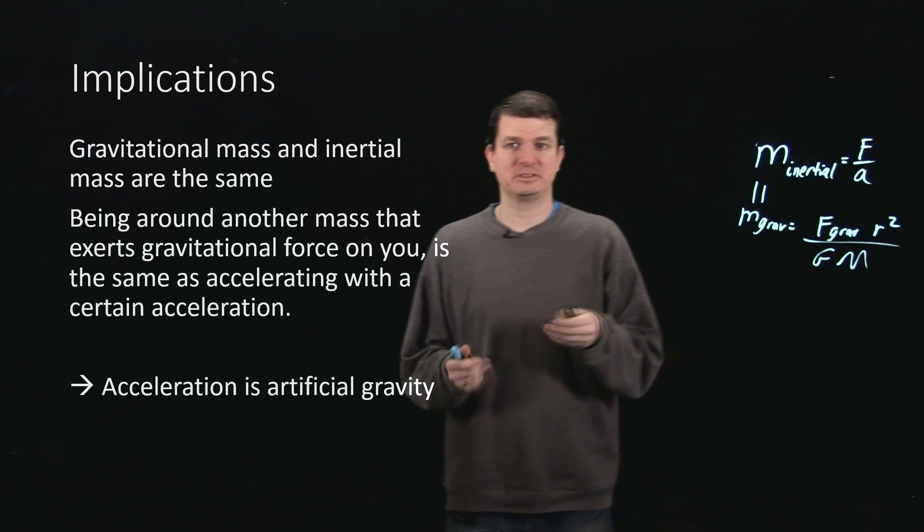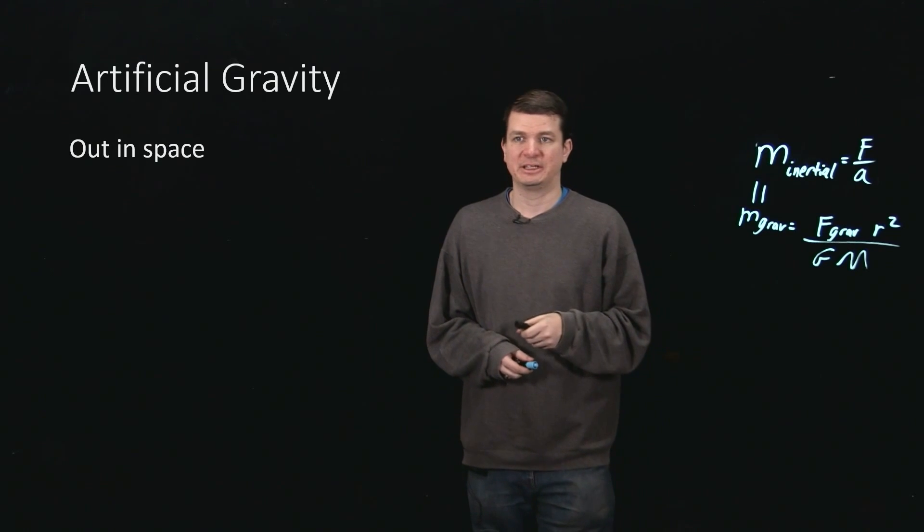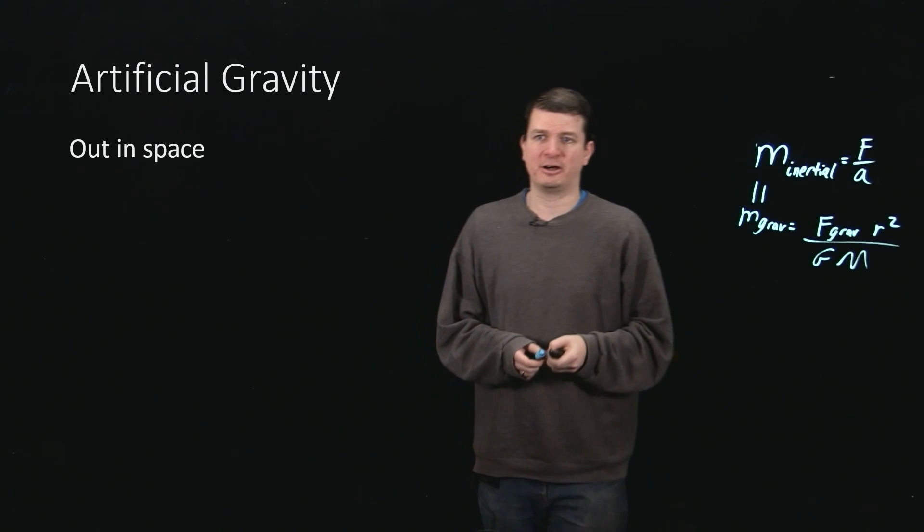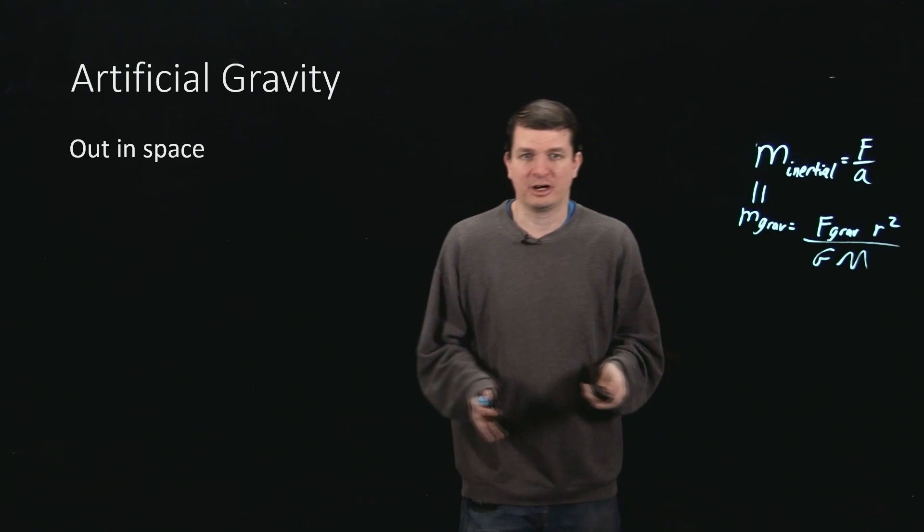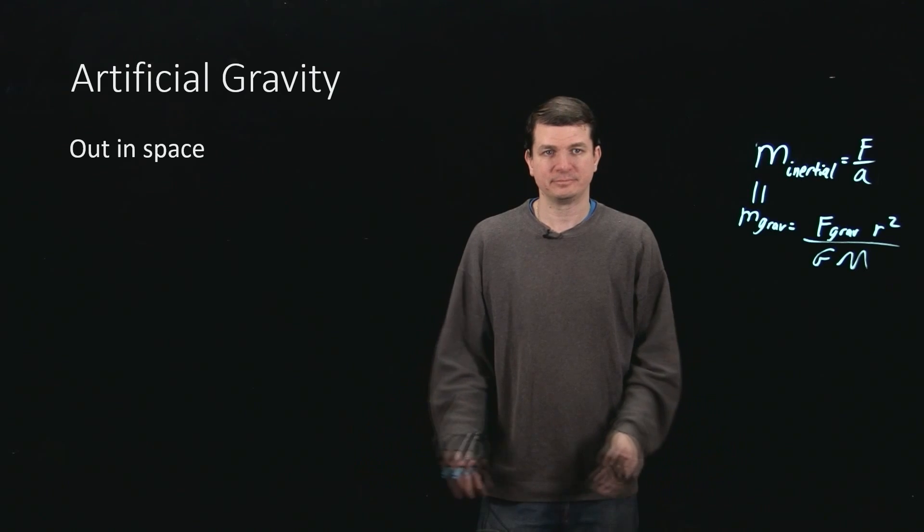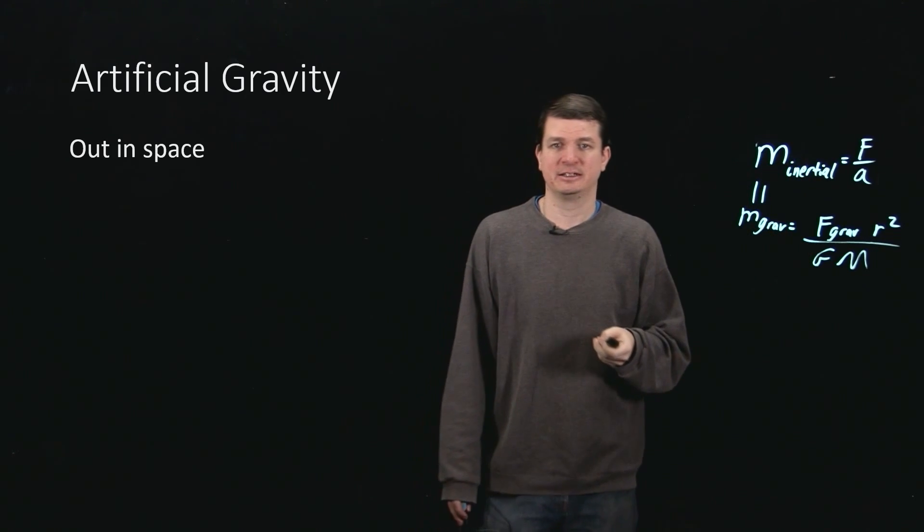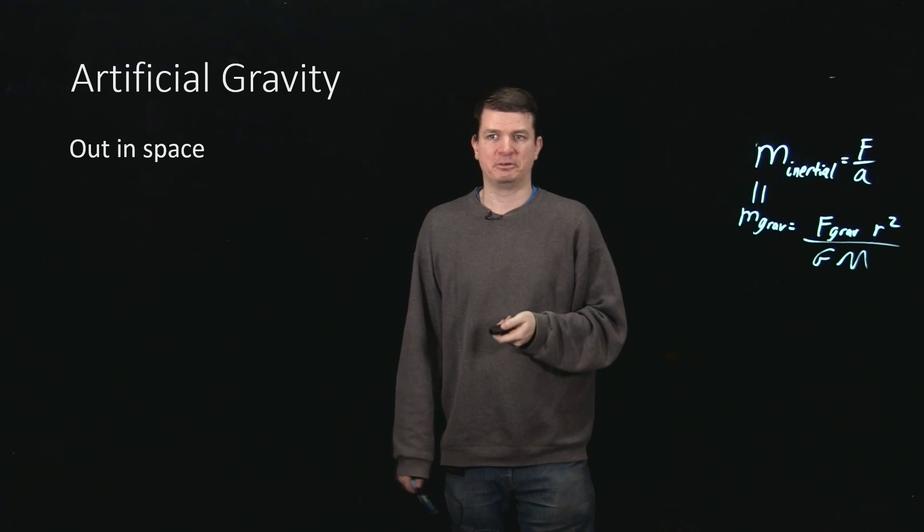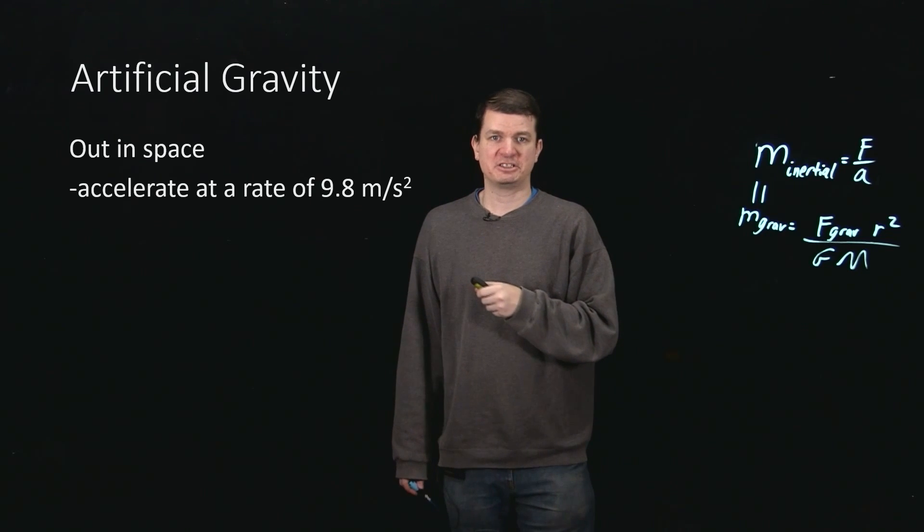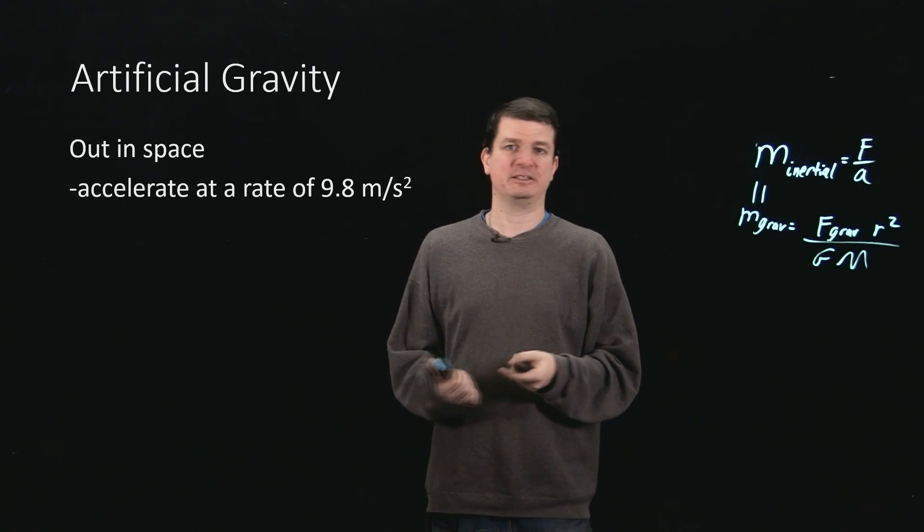Acceleration can be used as artificial gravity. What does that mean? Well, it means, let's say, that we are off out in space, not around a planet. There's no gravity. But I can use this equivalence of the masses to make things feel normal. If I just accelerate in my little spaceship at a rate of 9.8 meters per second squared, then I actually feel like I'm under the influence of Earth's gravity.